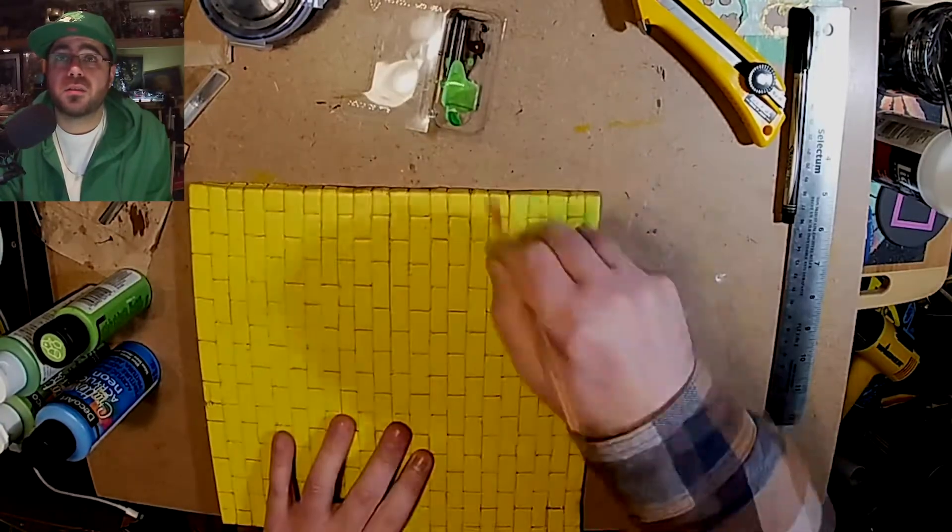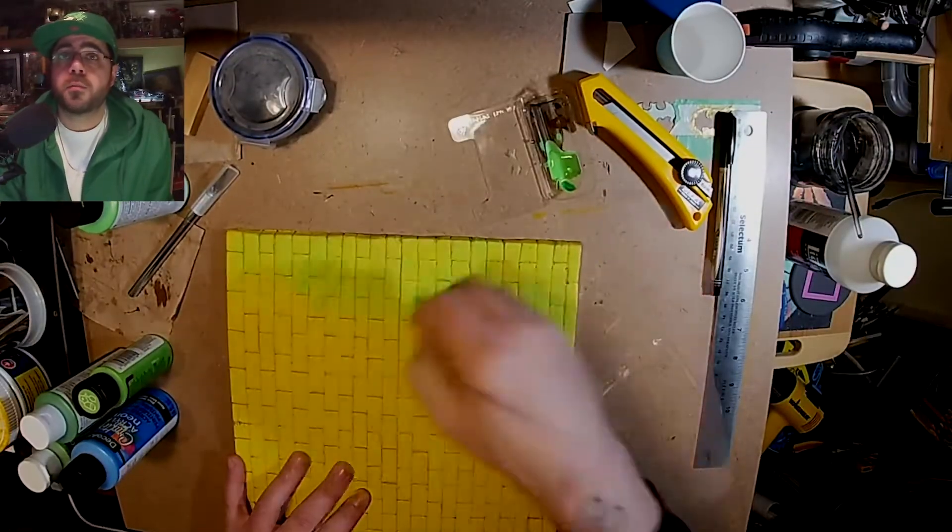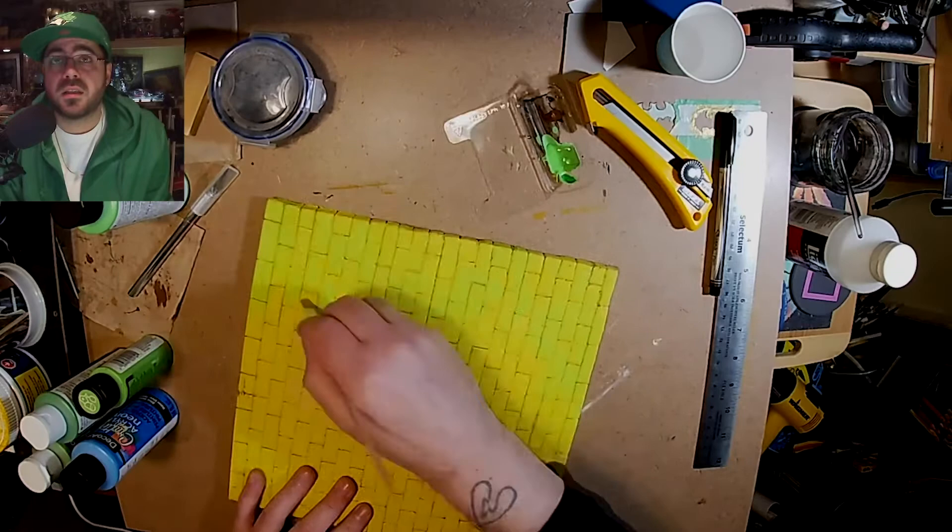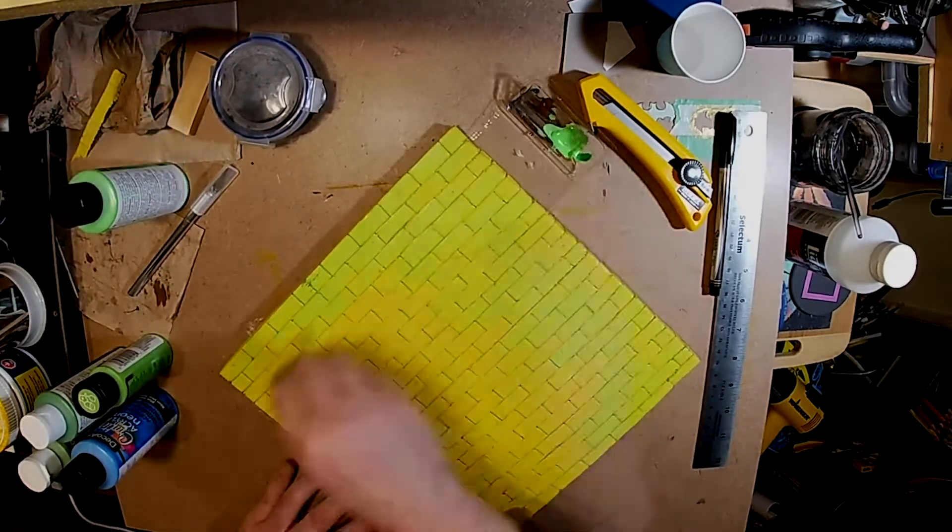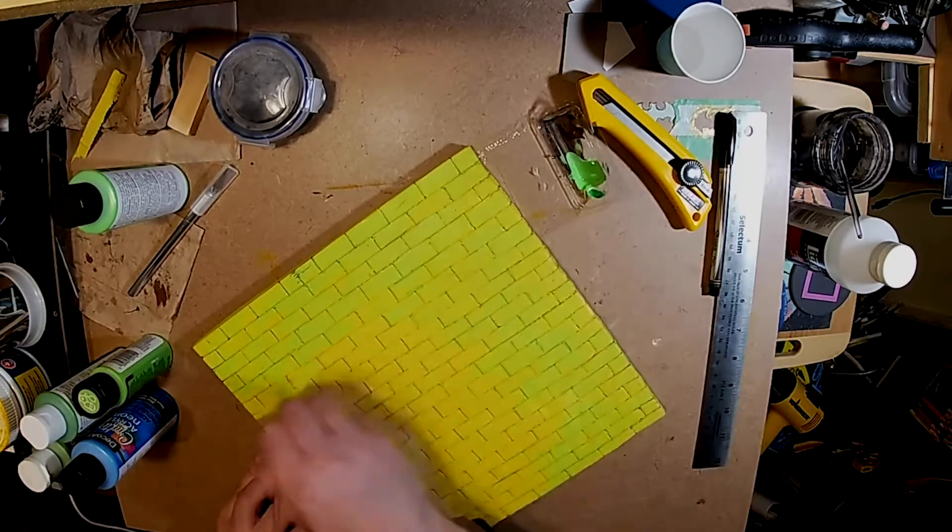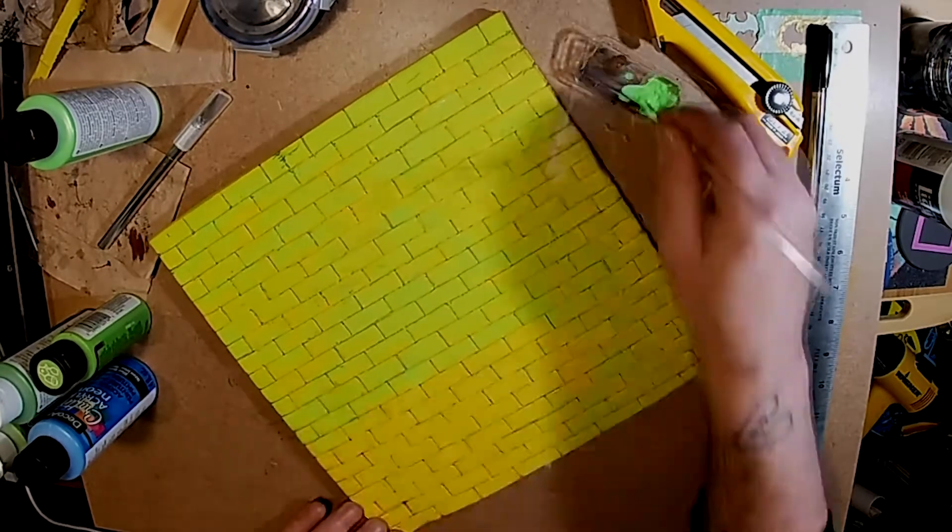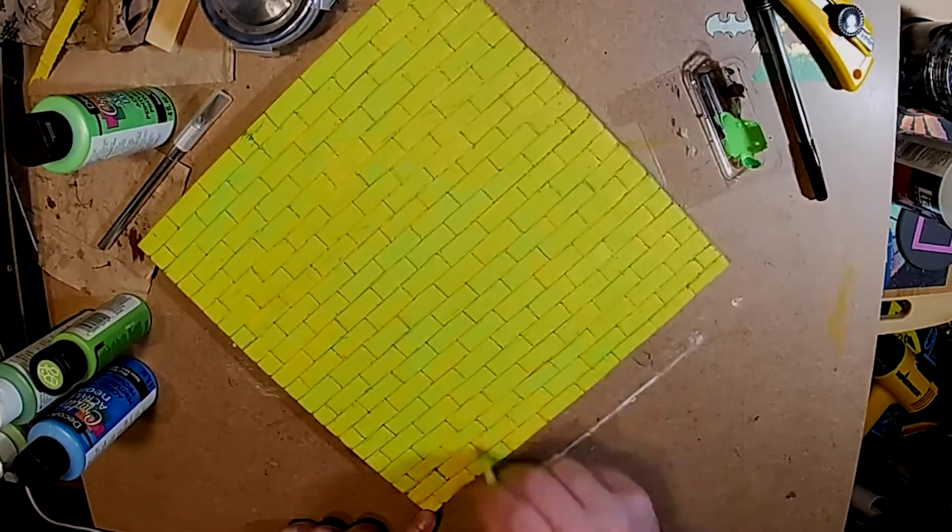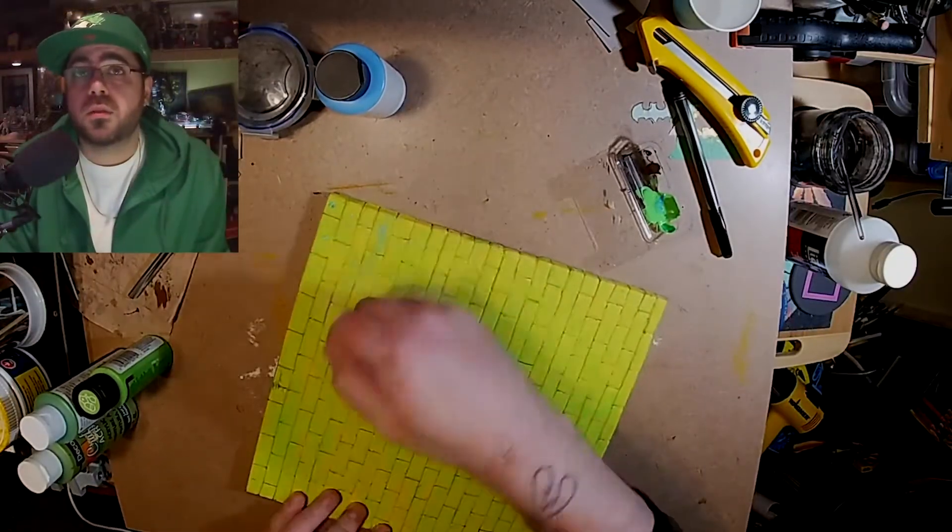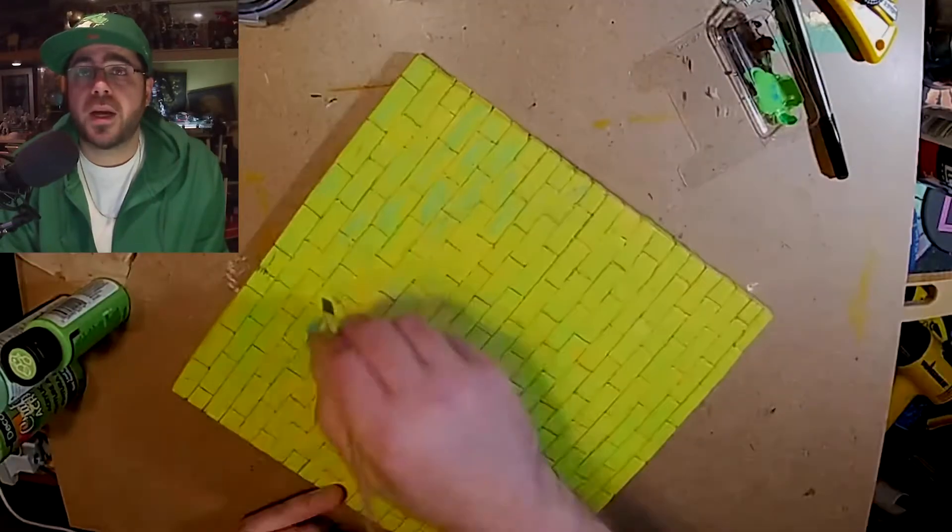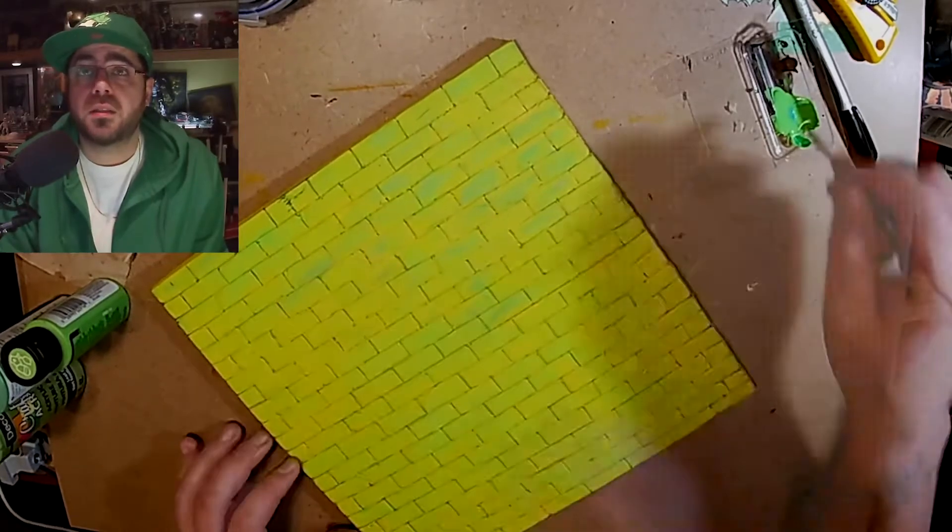Alright, starting with a lime green I think, or neon green, just lightly dusting it on, not trying to be perfect. Now I'm adding a little blue to the mix, spreading that around sporadically. It helps give a little age to the bricks.